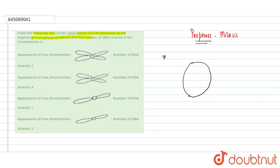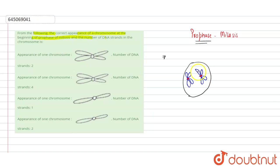In a typical prophase, it contains chromosomes in a condensed form. These are two sister chromatids which are joined together by a kinetochore. This is the appearance we observe — two sister chromatids in condensed form, joined together by a kinetochore.